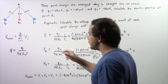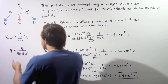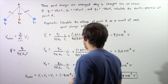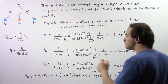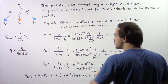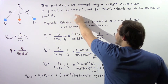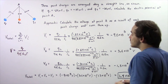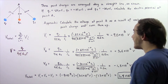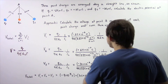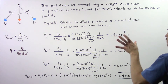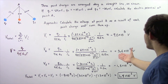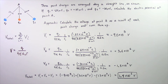Now let's move on to V2. We apply the same equation using Q2 and R2. Q2 is 60 microcoulombs, so 60 times 10 to the negative 6 coulombs, and our distance R2 is 0.15 meters. Plugging those into our calculator, we get positive 3.6 times 10 to the 6 volts.